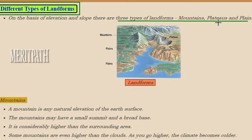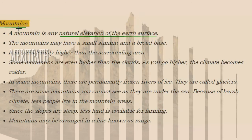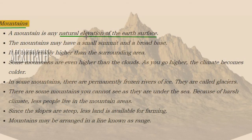On the basis of elevation and slope, there are three types of landforms: mountains, plateaus, and plains. In this image, students, you can see that mountains are located at great height, plains are located at ground level, and plateaus are located at a slightly higher elevation above the earth's surface.